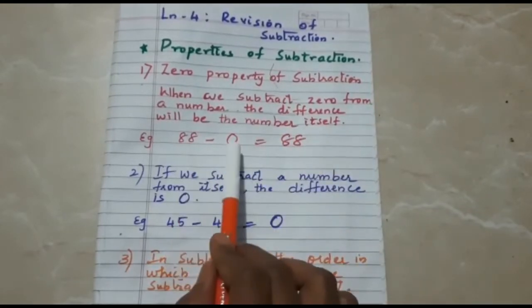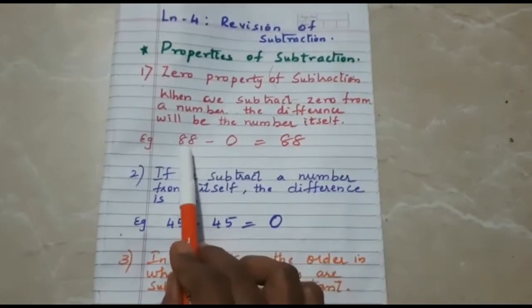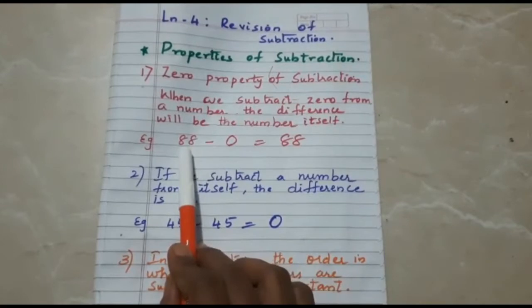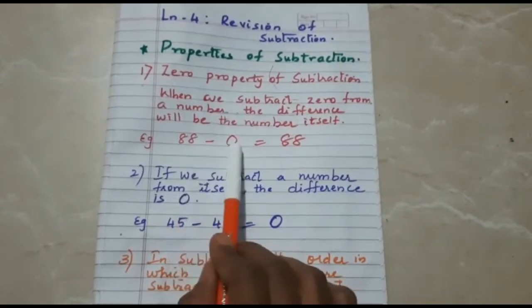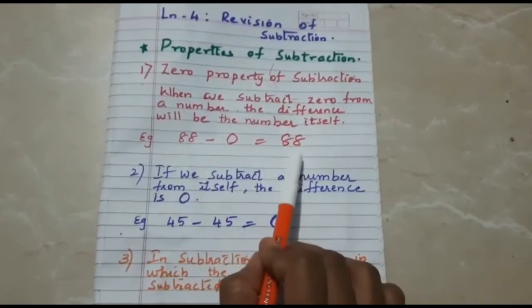For example, if I subtract 0 from 88, I get the same number.